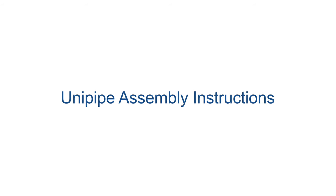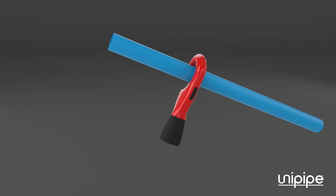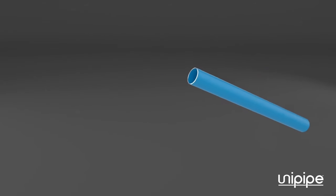Unipipe pipes and fittings are assembled correctly in just a few simple steps. If you need to shorten the pipe, remember to deburr the internal and external surfaces after cutting to avoid damaging the O-ring in the fittings.